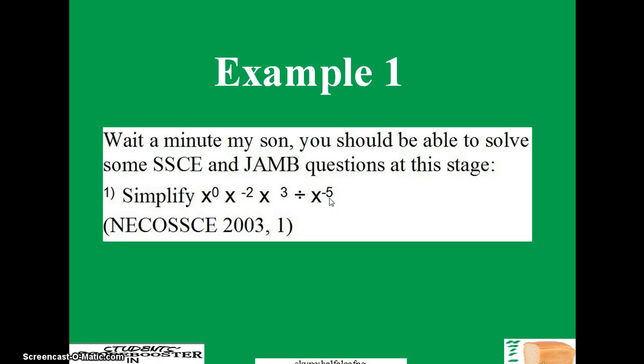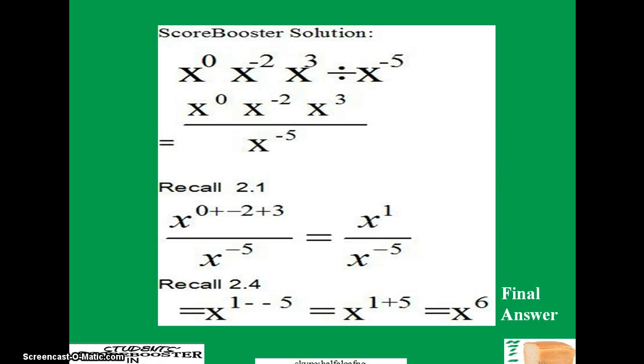The first thing that you should keep in mind here is that if you have two letters that are written together in mathematics, they are multiplying each other. For instance, x raised to power 0 is multiplying x raised to power minus 2, and x raised to power minus 2 is multiplying x raised to power 3. So how do we solve this? The first thing is just to rearrange this question. Put it in this form. This division becomes over.